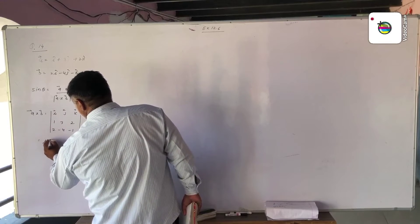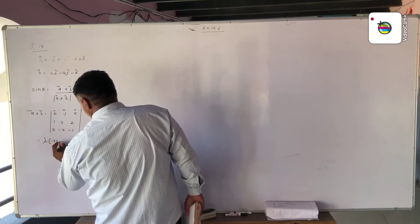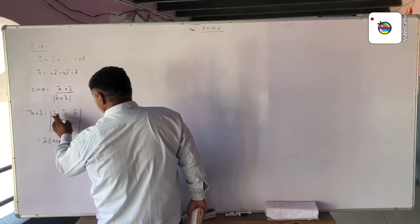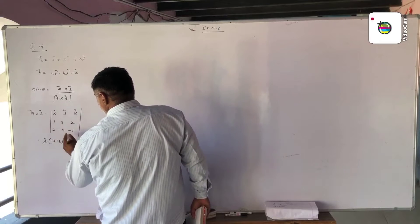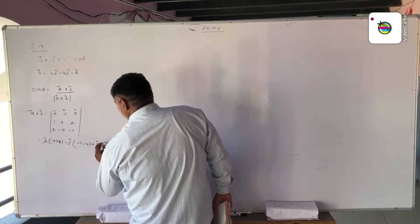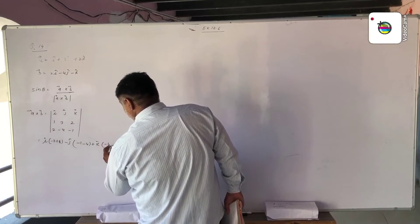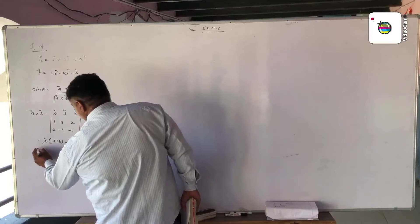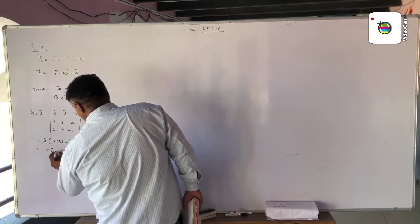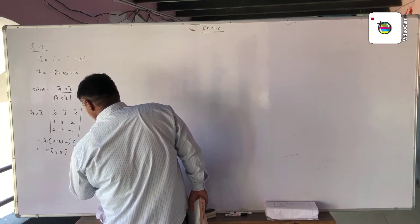Expanding the determinant: I into (minus 3 plus 8), minus J into (minus 1 minus 4), plus K into (minus 4 minus 6). We get 5I plus 5J minus 10K.